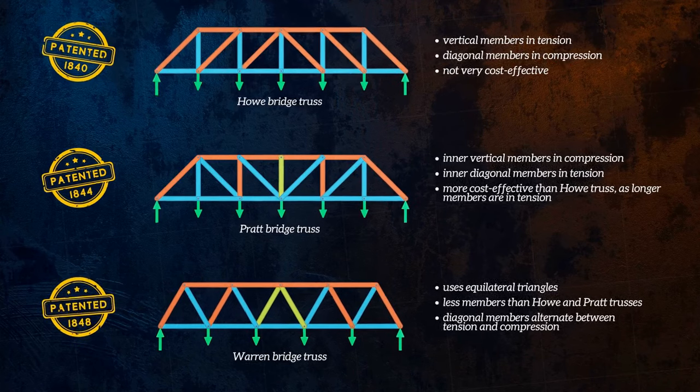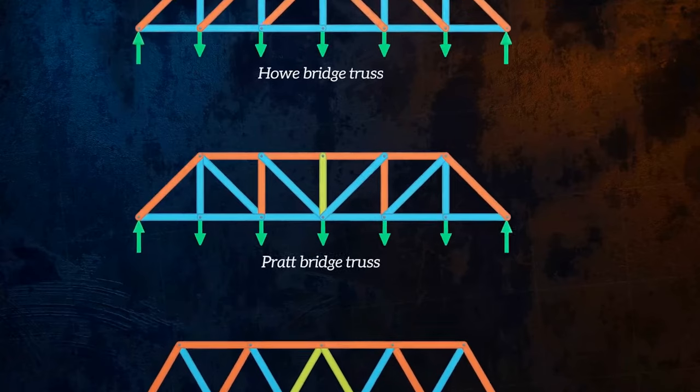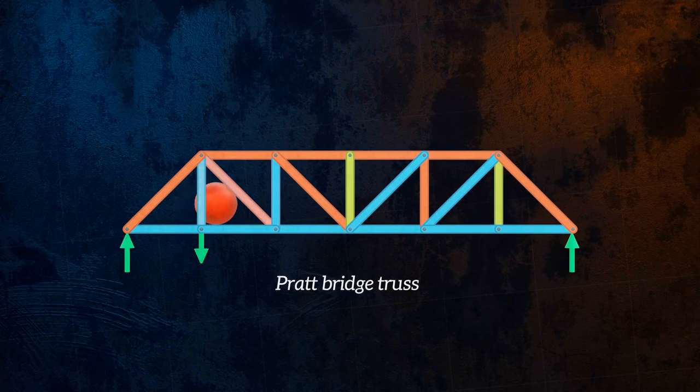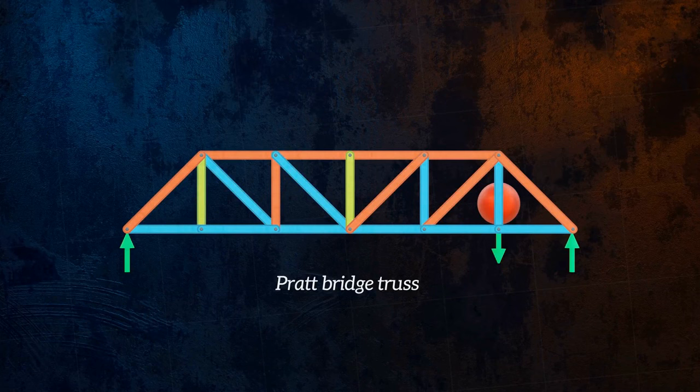It can also be interesting to observe how the loading in members changes as a load moves across a bridge. In this simplified model of a load moving across the Pratt bridge, we can see that some members alternate between tension and compression, and so will need to be designed accordingly.